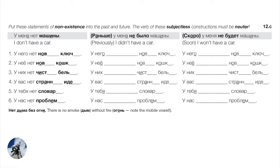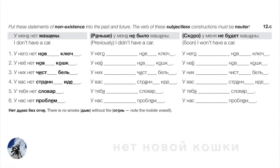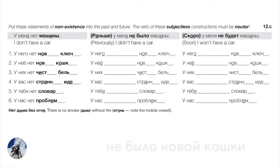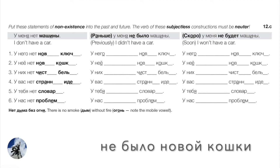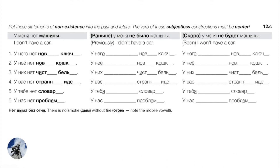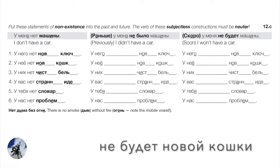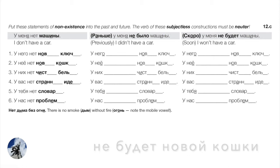Number two — кошка, a feminine noun. She doesn't have a new cat: У неё нет новой кошки — genitive ending ой + и. Past: У неё не было новой кошки. Future: У неё не будет новой кошки. The genitive portion новой кошки stays constant — новой кошки, новой кошки, новой кошки.